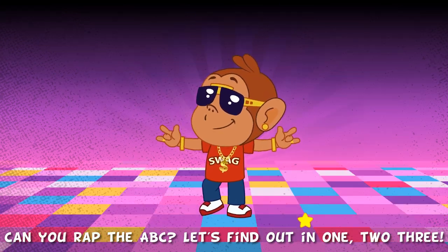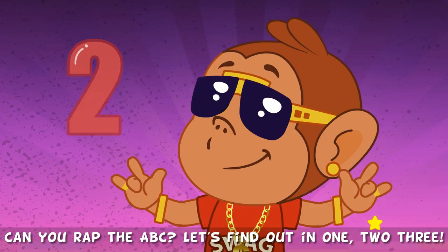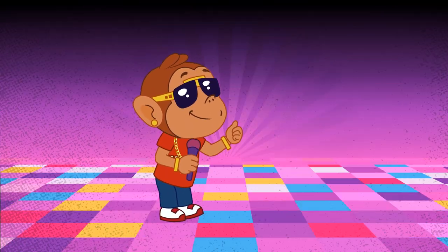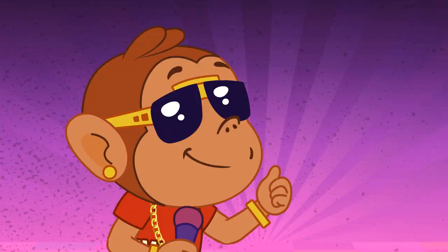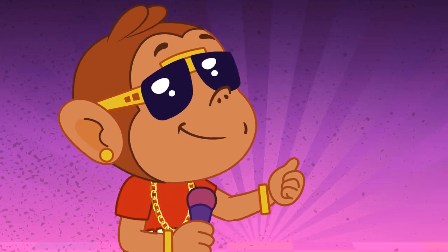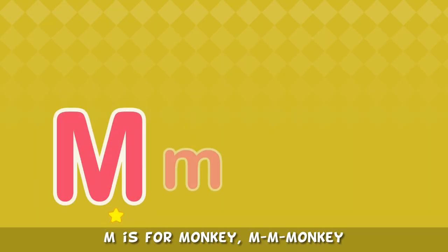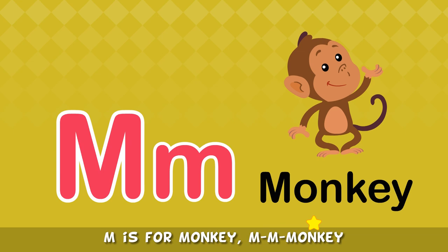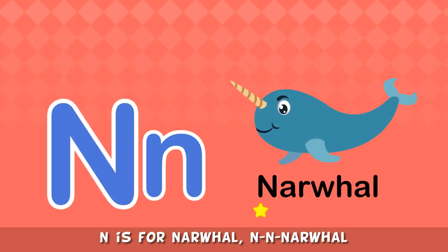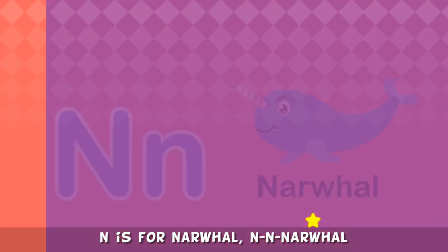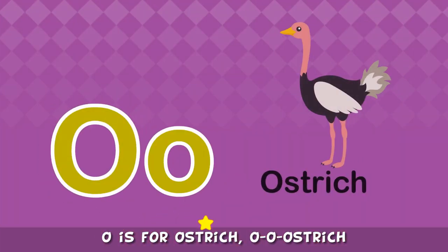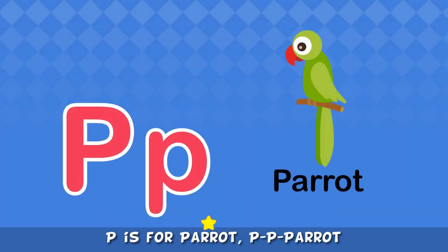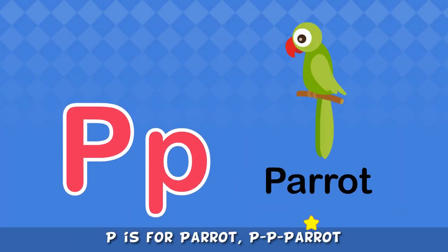Let's find out in 1, 2, 3! M is for Monkey, M, M, Monkey. N is for Narwhal, N, N, Narwhal. O is for Ostrich, O, O, Ostrich. P is for Parrot, P, P, Parrot.